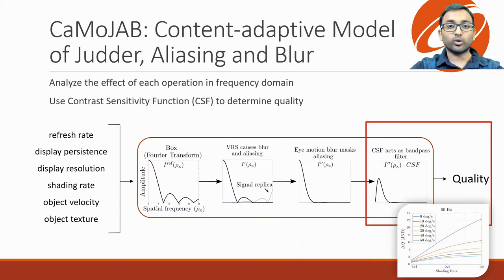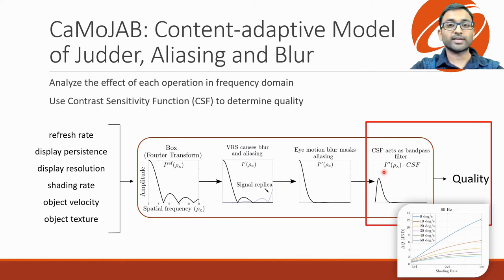Finally, once we know the image formed on our retina, we can modulate it with the contrast sensitivity function, or CSF. CSF tells us how sensitive we are to different spatial frequencies under varying illumination. It has a bandpass structure with a peak around 3-5 cycles per degree. We can take the difference in energy of the distorted signal and the reference signal as a measure of the amount of visible spatial distortions. Similarly, we can also determine the energy of temporal distortions. Here are some sample predictions of the model, which estimates that the quality difference between high and low shading rates decreases with velocity.